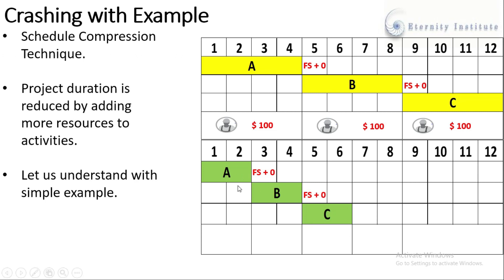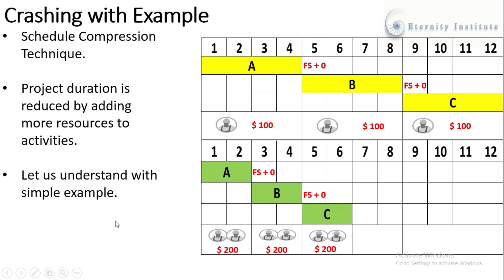These are the crashed activities. The duration of Activity A has now become two days, the duration of Activity B has become two days, and similarly the duration of Activity C has now become two days. This was achieved by adding more resources — in the previous case we had one resource, and here we have two resources.